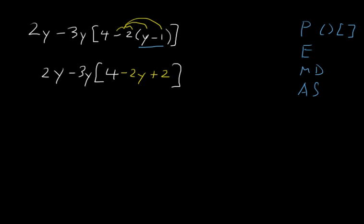We have negative 2y still there, so I'll put negative 2y, and 4 plus 2 is 6. That's what we have. Outside of that we still have the 2y minus 3y.